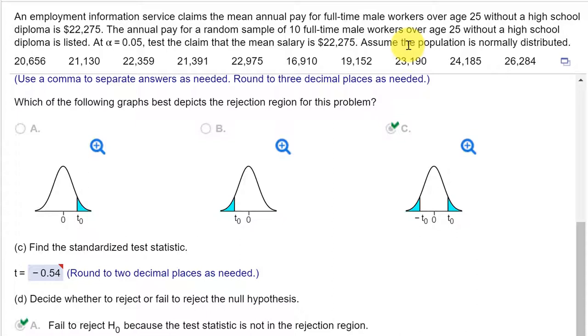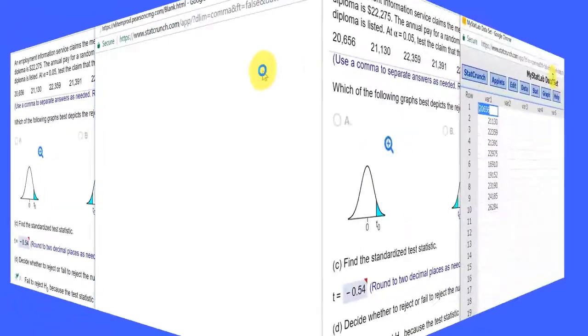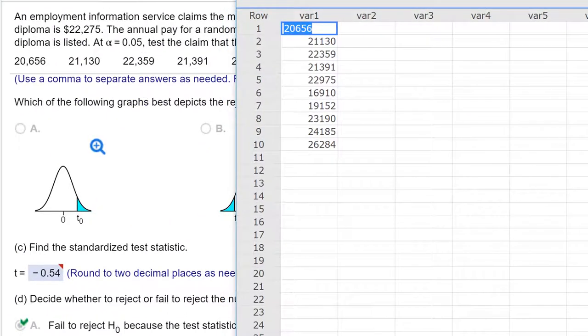To get the standardized test statistic, all we need to do if we're using StatCrunch is to go over here to the little blue rectangle, click on that, and then we're going to open in StatCrunch.